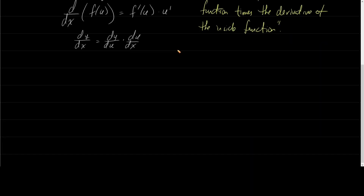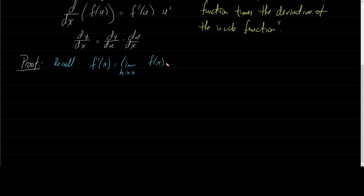Let's do a proof for this. Before I do the proof, first recall the alternative definition of a derivative. The alternative definition was that f prime of x equals the limit as x goes to c of f of x minus f of c over x minus c.